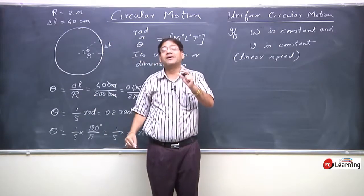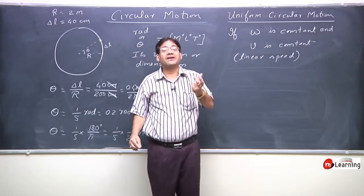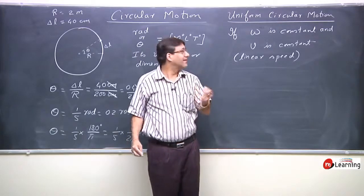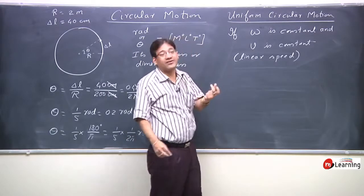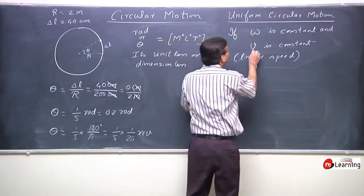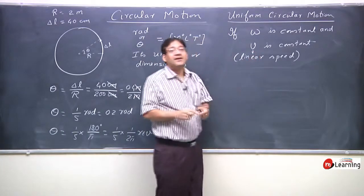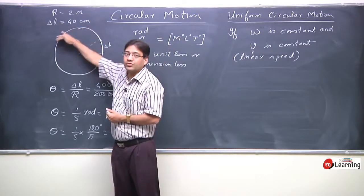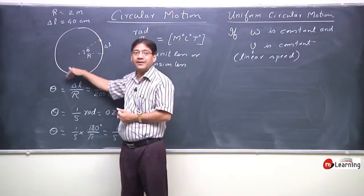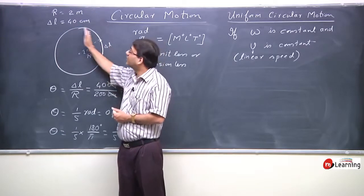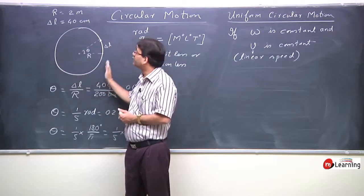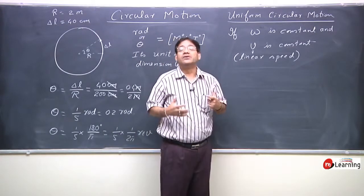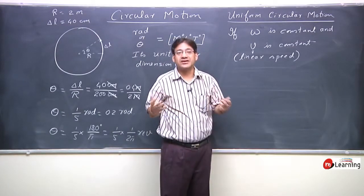In a curved path, a circular path, when a particle moves, its velocity direction is not constant but its linear speed is constant. This V is a linear speed. When a particle moves with constant linear speed and constant angular velocity on a circular path, we term that particle's motion as Uniform Circular Motion.